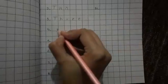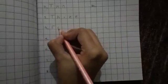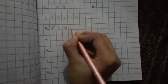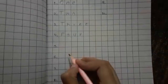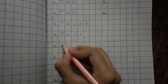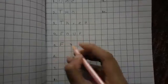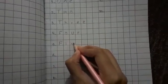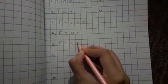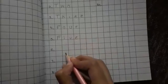Next, four: F, O, U, R — four. Next, five: F, I, V, E — five.